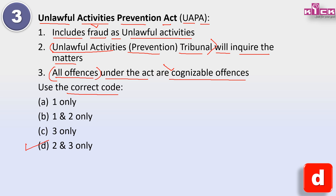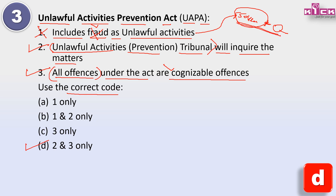Answer is D - 2 and 3 only. Fraud has no relation with UAPA. UAPA is related to India's sovereignty - protecting India's sovereignty at the international level, protecting India's institutions, and also protecting India from terrorism. The Unlawful Activities Prevention Act was made for this purpose and it is quite old.